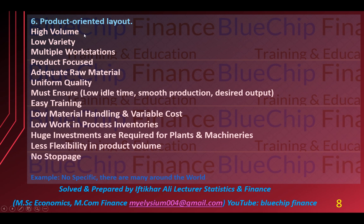High volume production use hoti hai — high volume produce kiya jata hai, to production jo barh'ti hai to variable cost ko by-law kam hona chahiye. Agar variable cost kam nahi ho rahi to phir kahi na kahi problem hai jo address karni chahiye. Work-in-process inventories aam taur pe low hoti hain — agar low nahi hain to us ko correct karna chahiye. Bohat bari plants use hoti hain to capital investment bohat ziyada chahiye. Is mein jo flexibility hai wo process oriented layout ke comparison mein kam hoti hai.